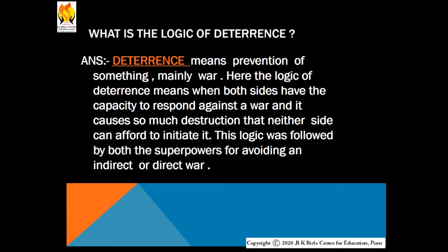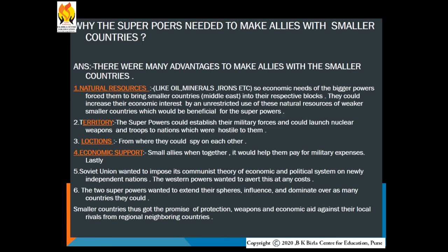The logic of deterrence: why was it so important? It was an essential military strategy of both superpowers and a crucial ingredient in winning the Cold War without actually fighting World War Three. Deterrence is a strategy combining two competing goals: countering an enemy and avoiding war — that is, a balance of power. The logic of deterrence means when both sides have the capacity to respond to an attack causing massive destruction, neither side can afford to initiate it. This logic was followed by both superpowers to avoid direct or indirect war.